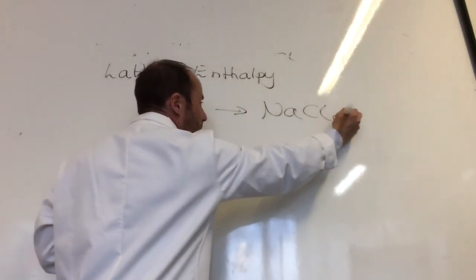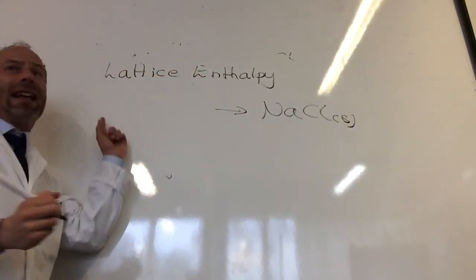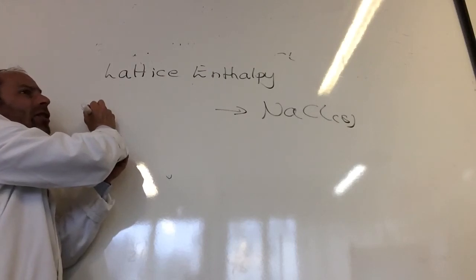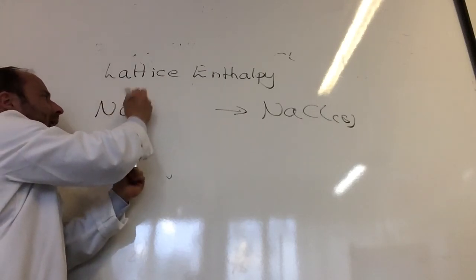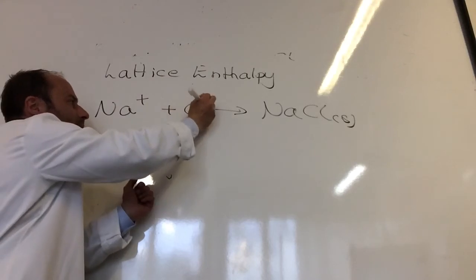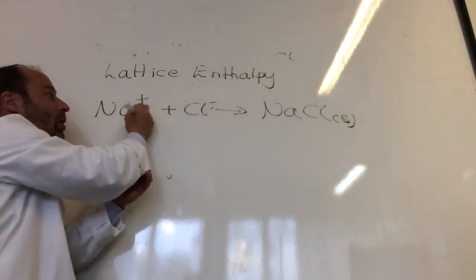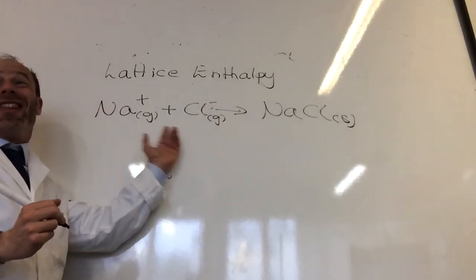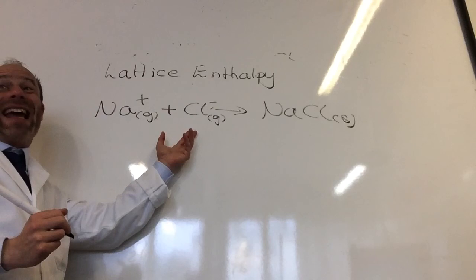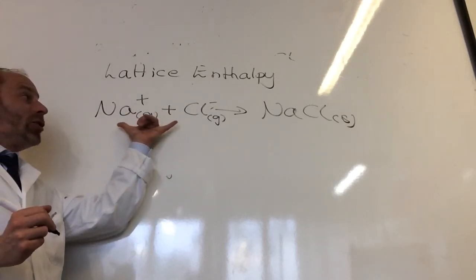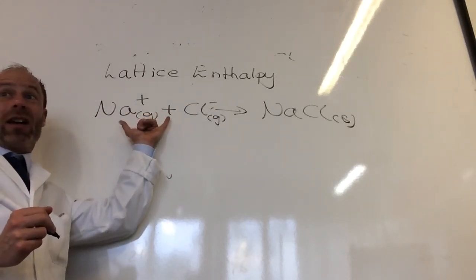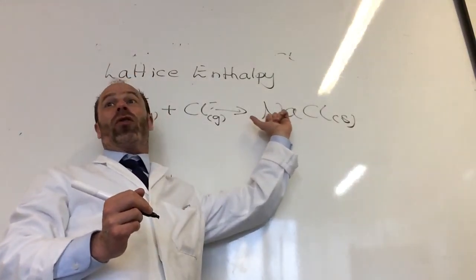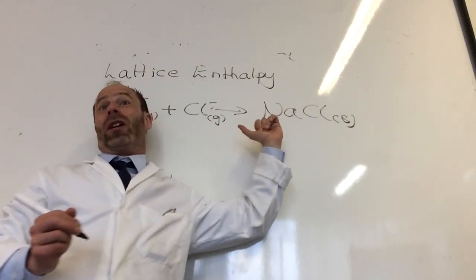So let's do sodium chloride as a solid. The lattice enthalpy for that, I need to start with what ions are in sodium chloride? Na plus, Cl minus. Yeah, Na plus, Cl minus. And they both have to be in the gaseous state, like so. And that is always a massively exothermic reaction. Because you imagine I've got two gaseous ions coming together, and the amount of energy produced gives you a measure of how strong my ionic bond is between those ions.